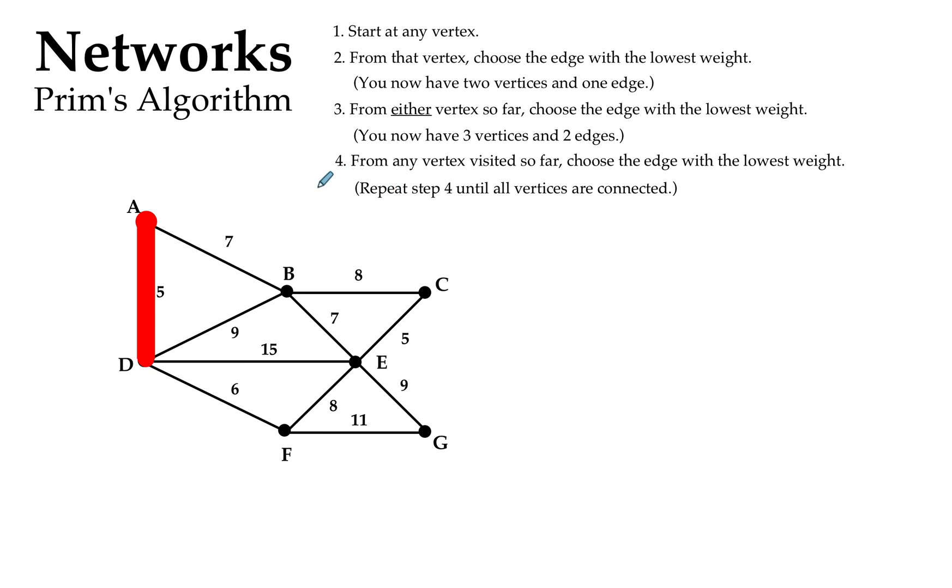Now I've collected, even just with one edge diagram there, a vertex at A, a vertex at D, and I've got an edge there. Now from any of those points so far, from either vertex so far, choose another edge that's connected to that with the lowest weight.